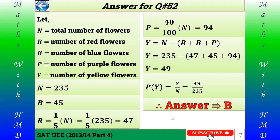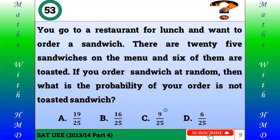Question number 53: you go to a restaurant for lunch and want to order a sandwich. There are 25 sandwiches on the menu and 6 of them are toasted. If you order a sandwich at random, what is the probability that your order is not a toasted sandwich? A) 19/25, B) 16/25, C) 9/25, D) 6/25. Please try by yourself first.